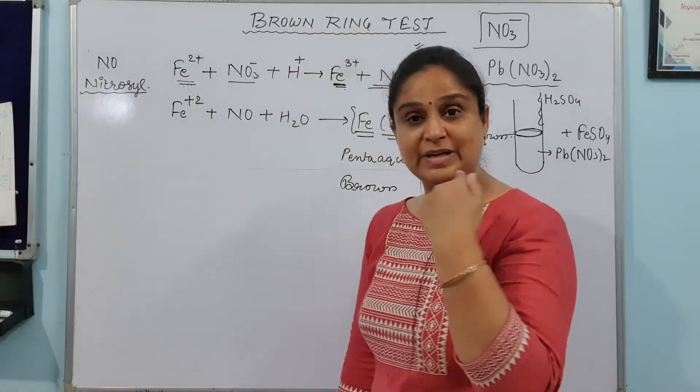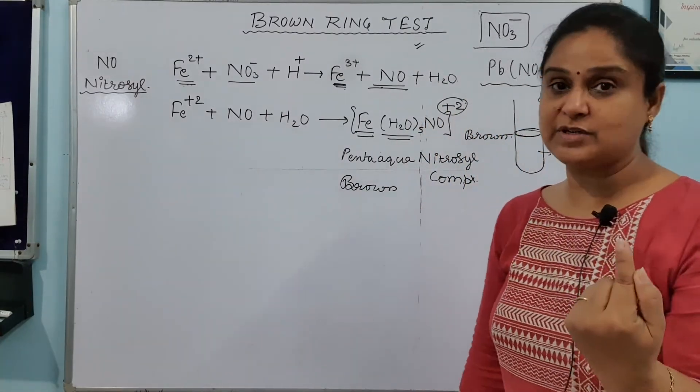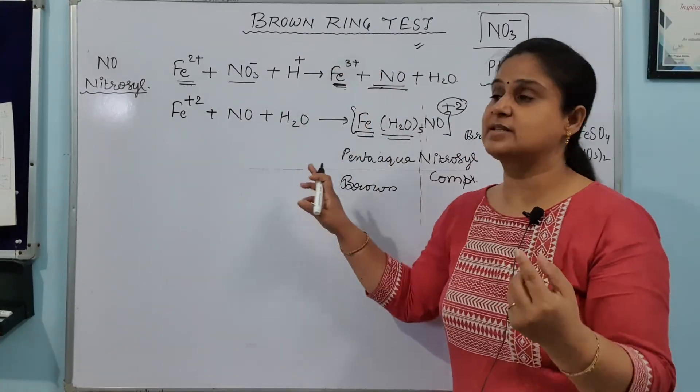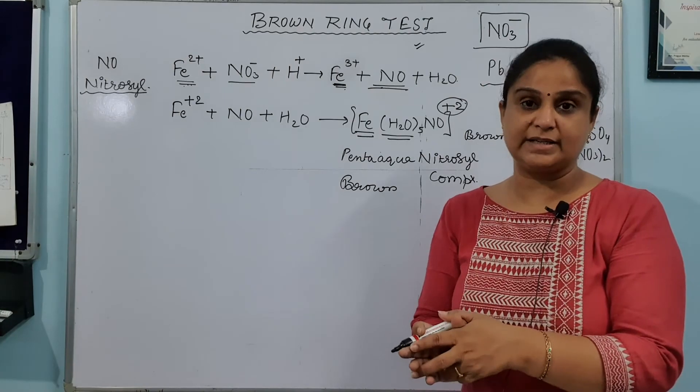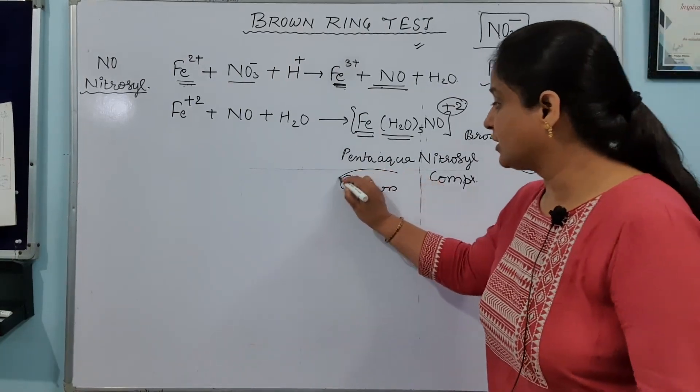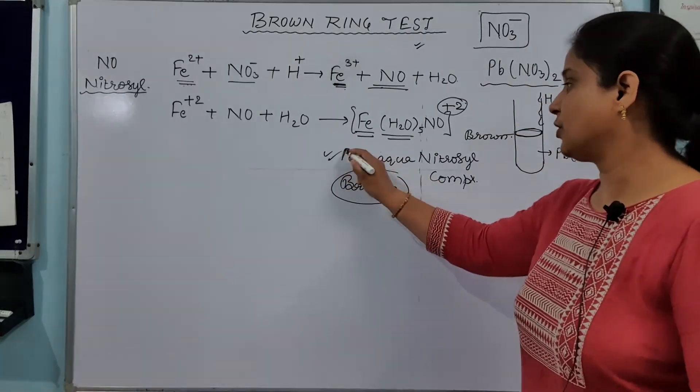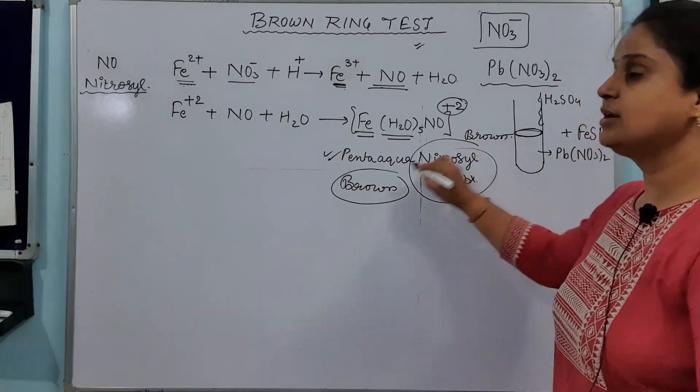For a fraction of second, at the meeting point it forms. So you observe it as a ring. And that is why this test is known as brown ring test. I hope it is clear what is the brown color. It is because of the complex called nitrosyl complex.